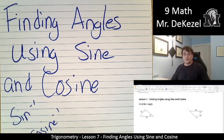Hello, grade 9 math class. Welcome back to another lesson. We have number 7 today, where we're going to find angles using sine and cosine instead of tan. Very similar process, let's get into it.